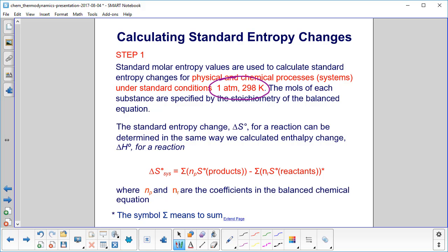Of the balanced equation. The standard entropy change, ΔS°, for a reaction can be determined in the same way we calculated the enthalpy change, ΔH°, for a reaction. So we have ΔS° of the system equals the sum—and here's the coefficient in the balanced chemical reaction—times your standard molar entropy value for the products, and each one you add by how many are in the equation, and you subtract out the product of the reactants.